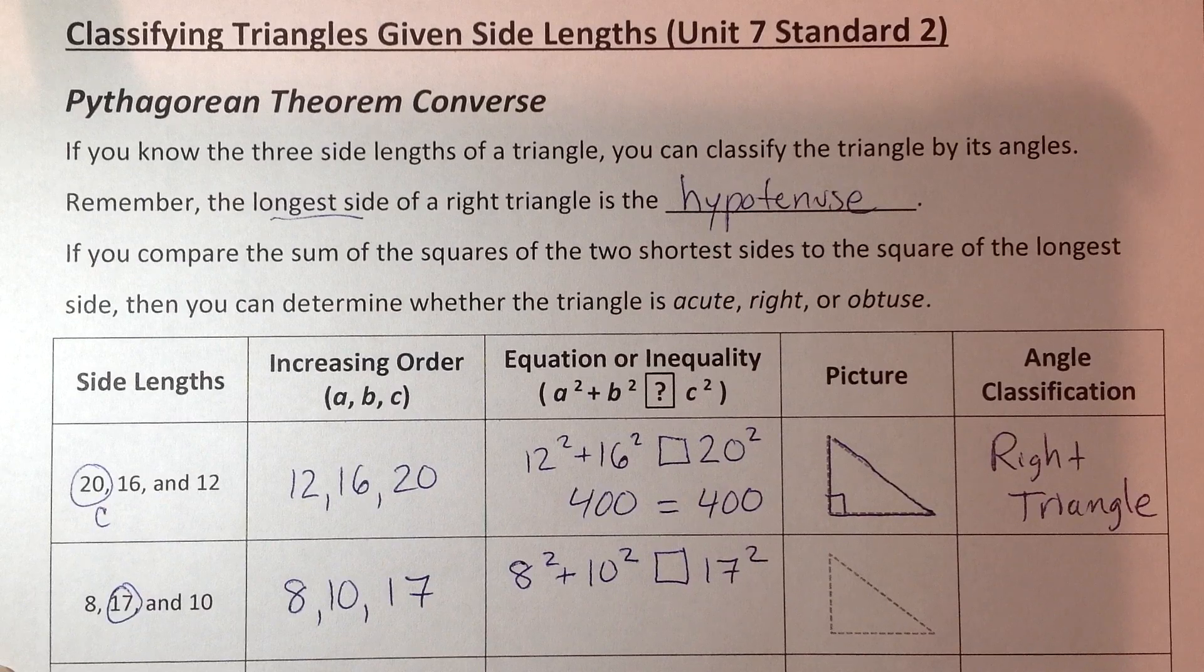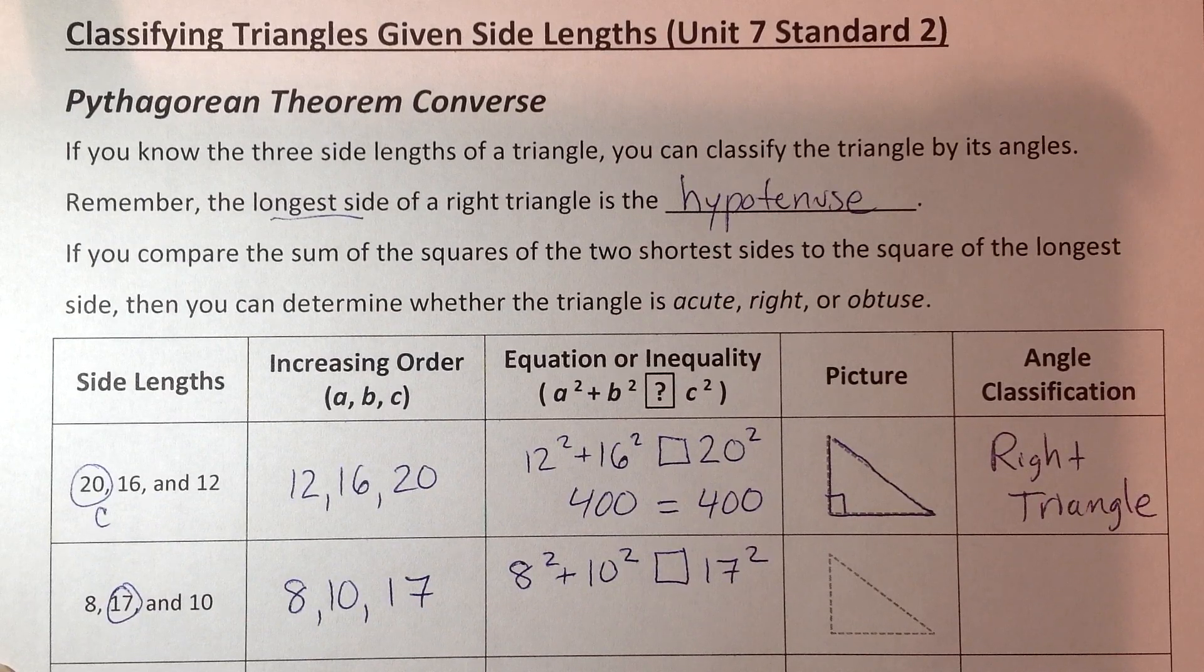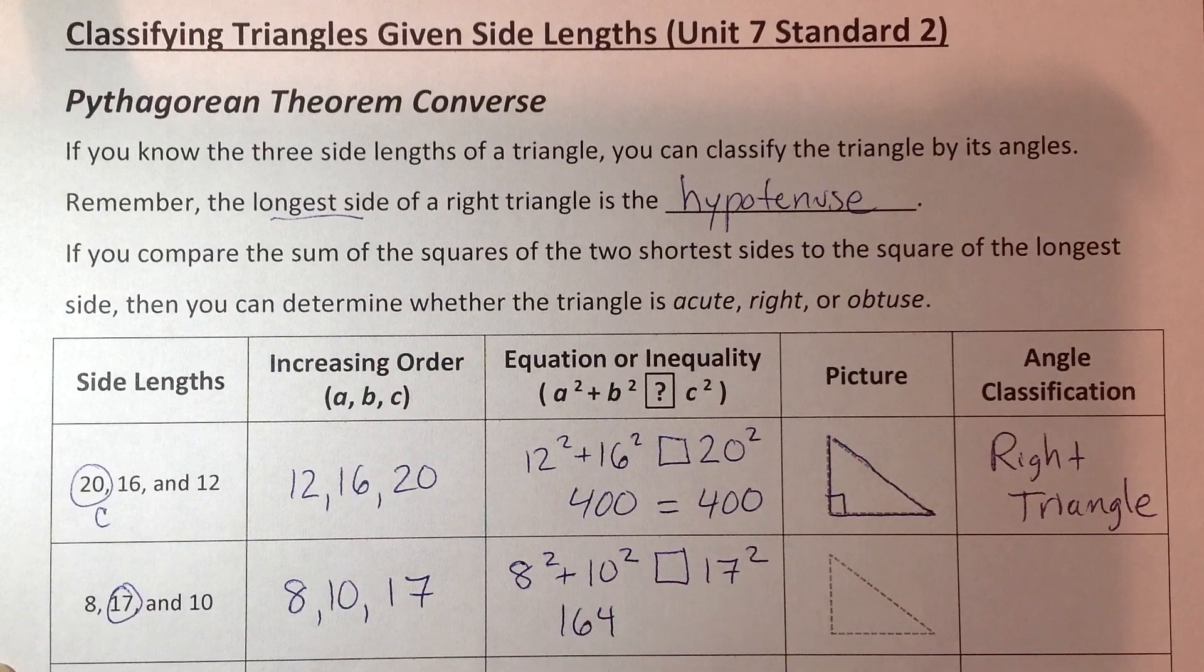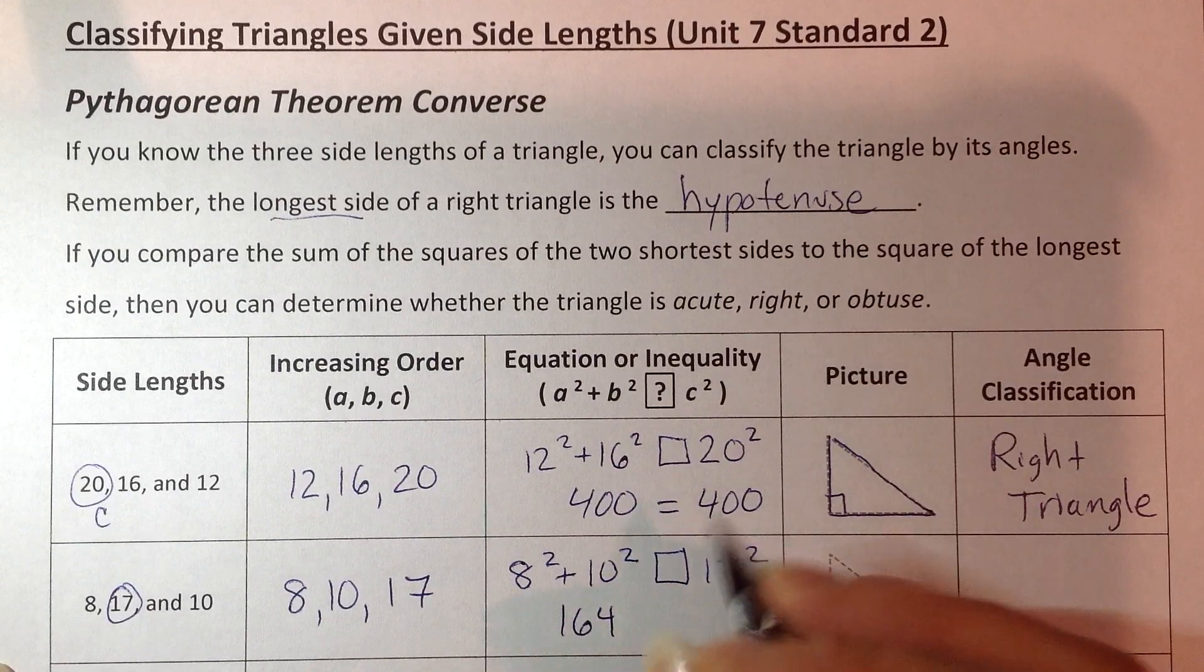You can put it all in your calculator at once. 8 squared plus 10 squared, 164. 17 squared, 289.